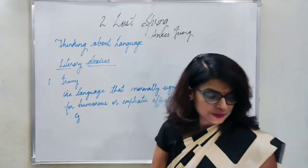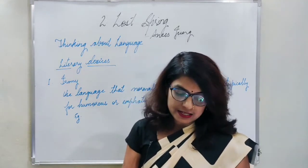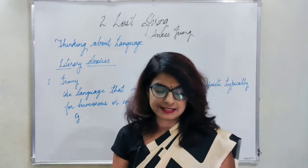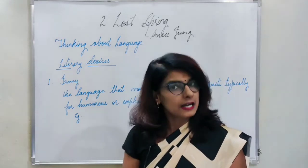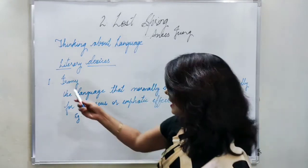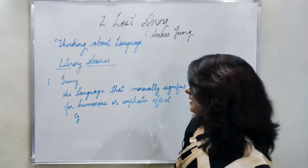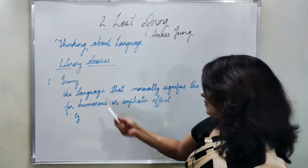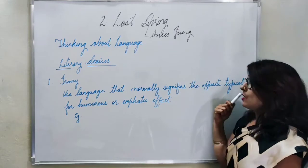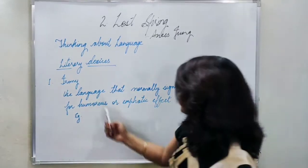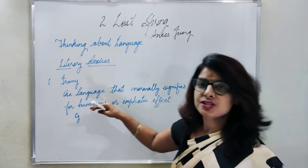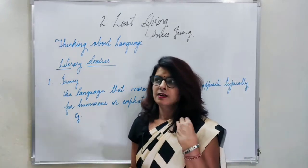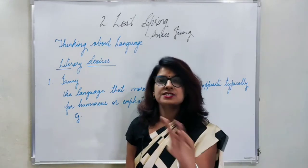The first sentence is 'Sahib-e-Alam,' which means 'the lord of the universe,' and is directly in contrast to what Sahib is in reality. Irony is used here. What is irony? Irony is a literary device where we use language that normally signifies the opposite, typically for humorous or emphatic effect. Simply put, two opposite things appear together that contradict each other.